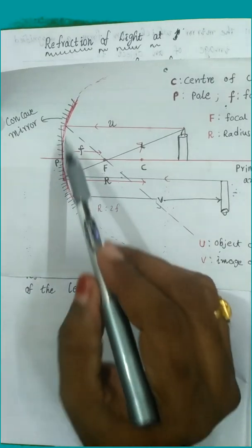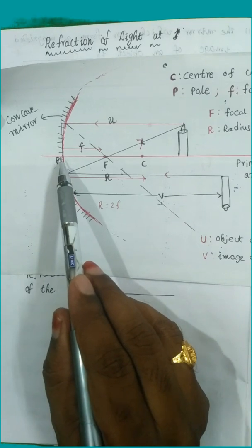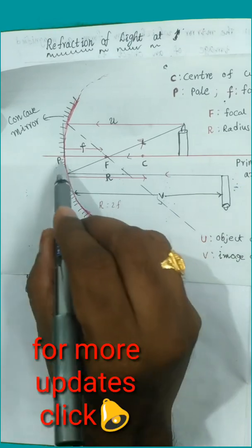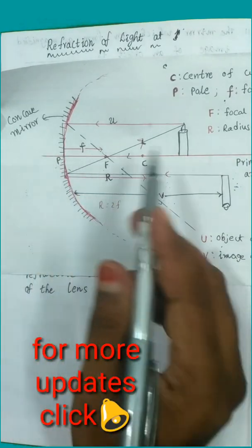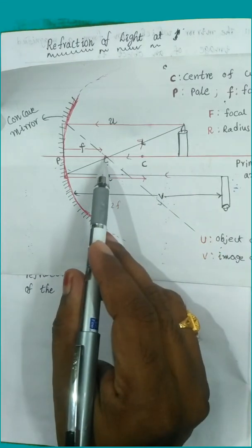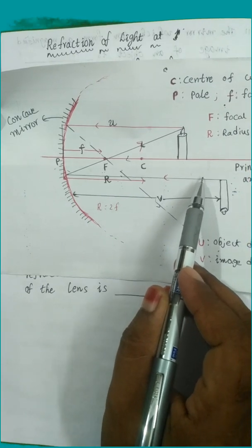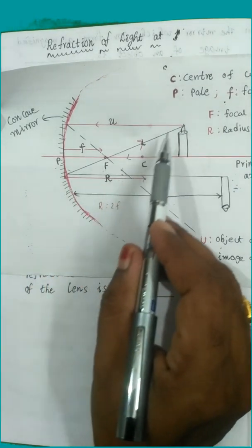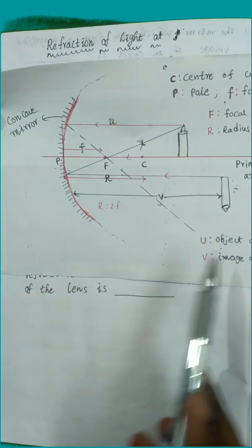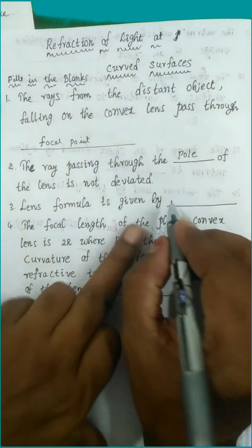I would like to show the pole using this diagram. For a concave mirror, the center of curvature is called the pole. Any ray passing through the pole will not deviate — it continues in the same direction. A ray passing through the focal point becomes parallel, and a ray parallel to the principal axis goes toward the focal point. These are important definitions to remember.